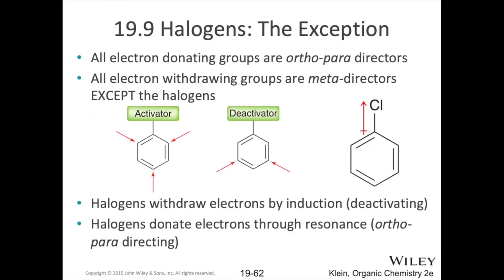So to summarize: if you have an activating group, it tends to be ortho and para directing. The new substituent coming in comes in either at the ortho or the para position — sometimes more selectively for the para position depending on how bulky that activating group is. With a deactivating group, we see that generally it's going to go to the meta position, probably with a lower reaction rate and lower yield than we would see with activating groups.